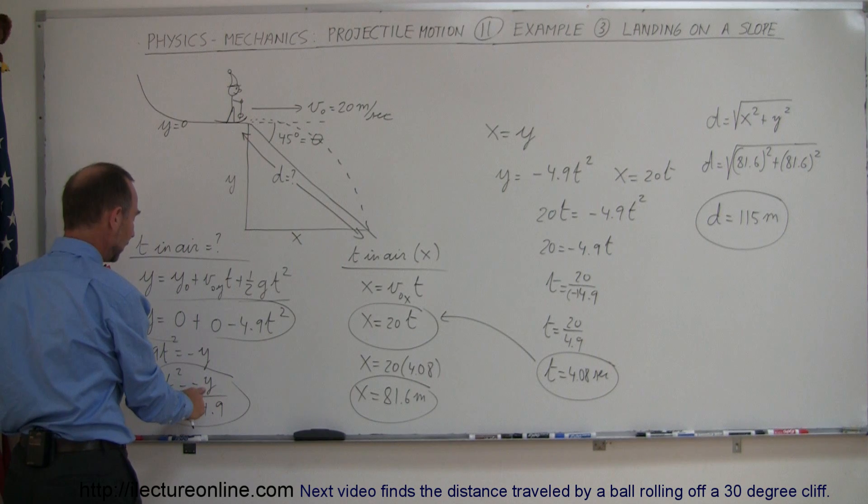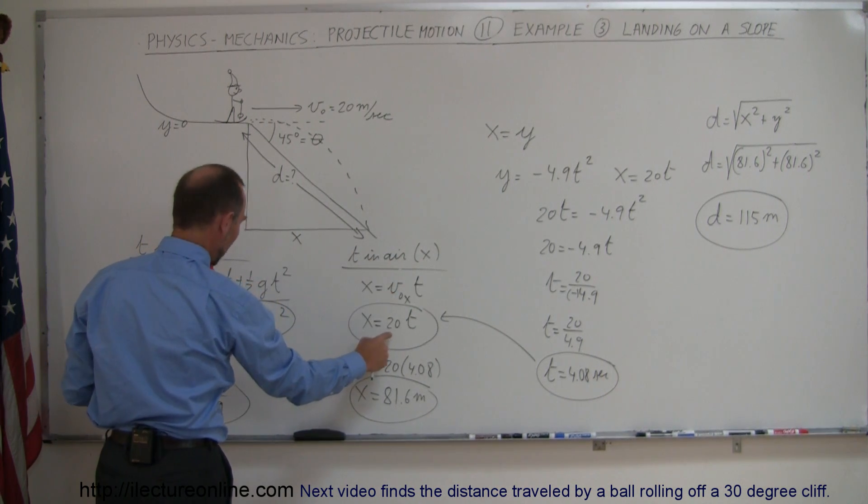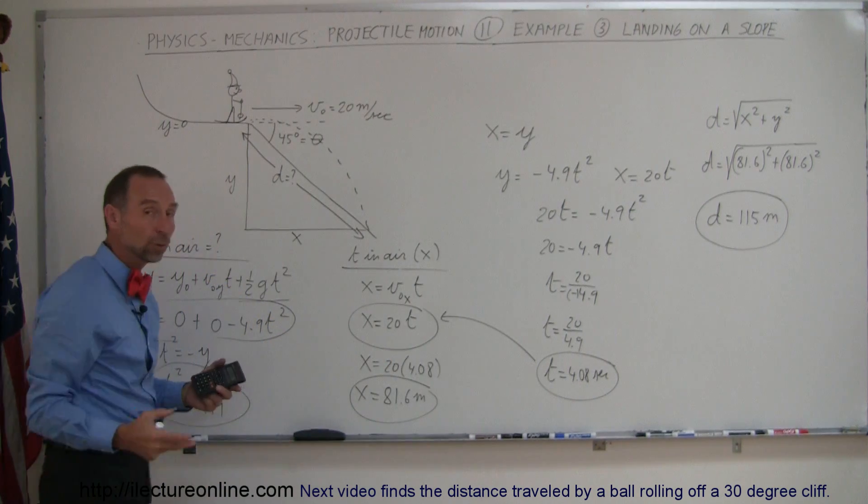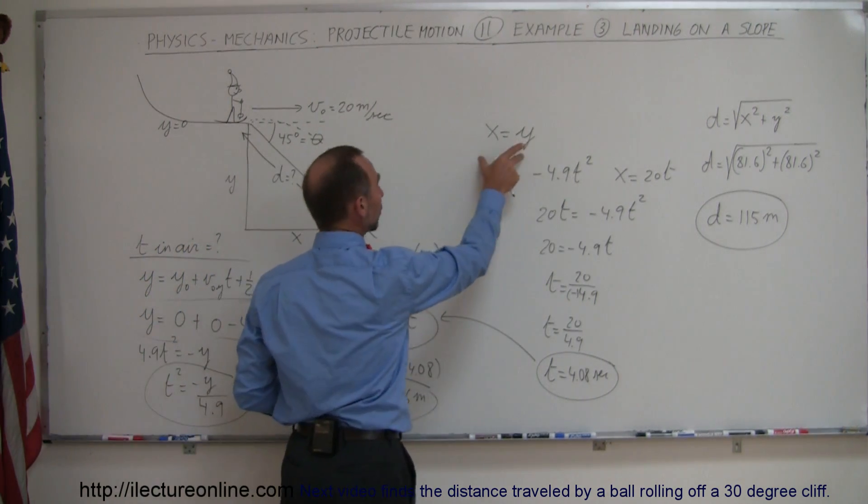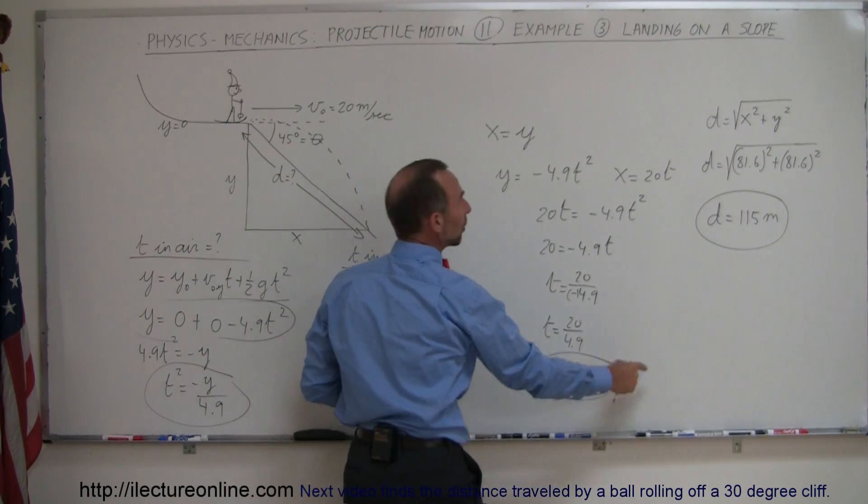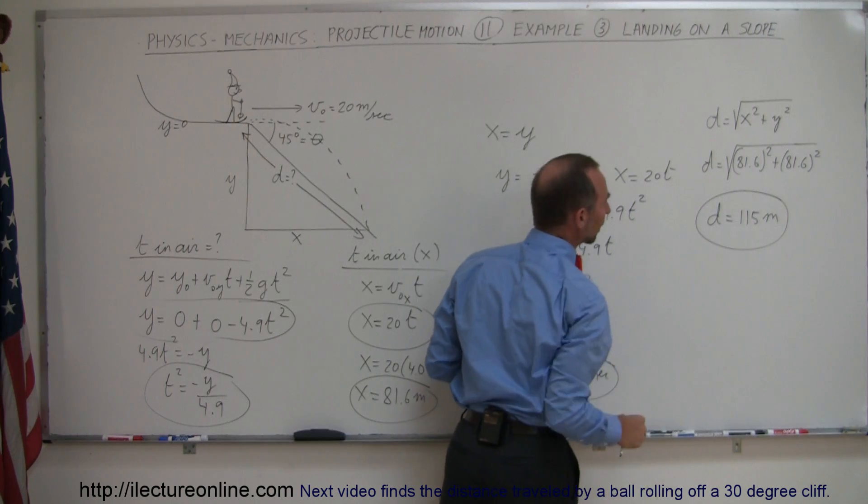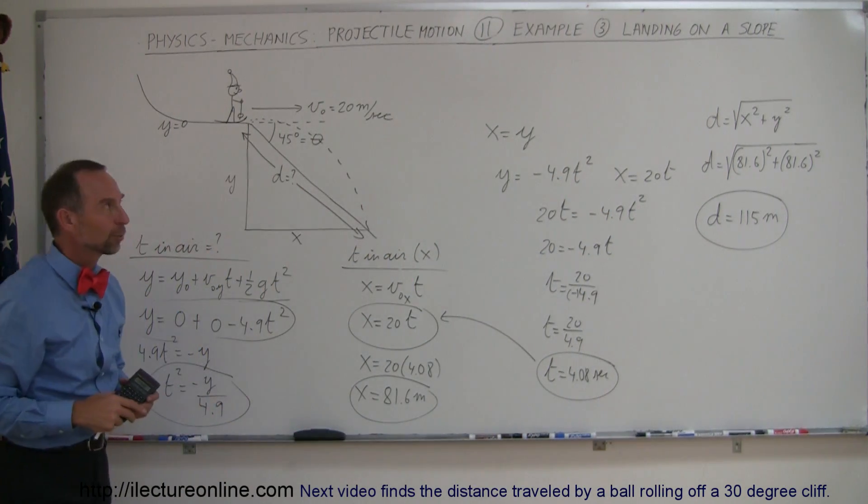So then we use the same concept in the x direction as well, so now we have two equations and two unknowns. We then realize that x and y must be equal, so we can set the two equations equal to each other, then we solve for time, then we plug it in to the Pythagorean theorem to find the distance, and that's how you solve this problem.